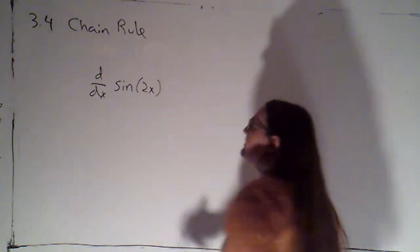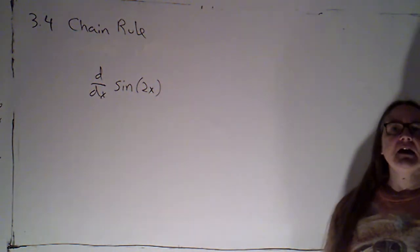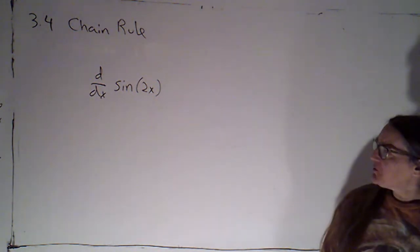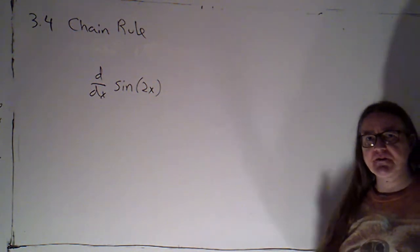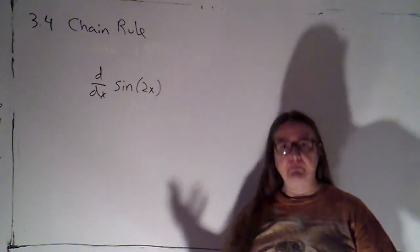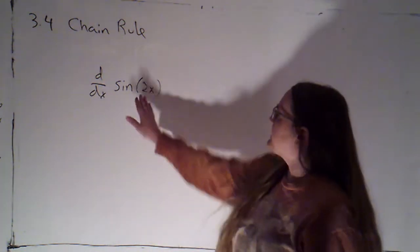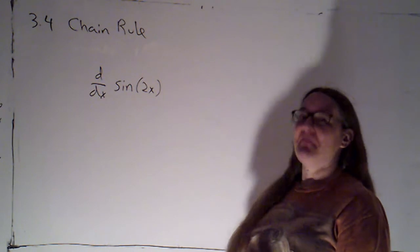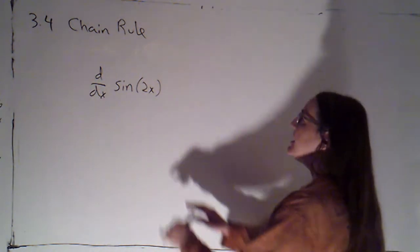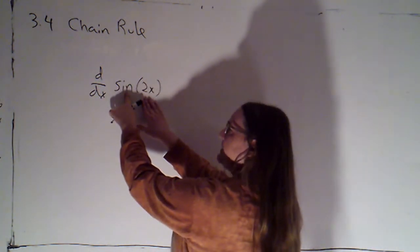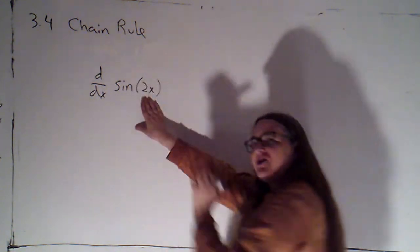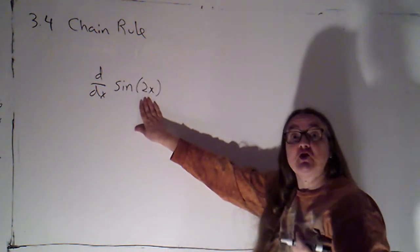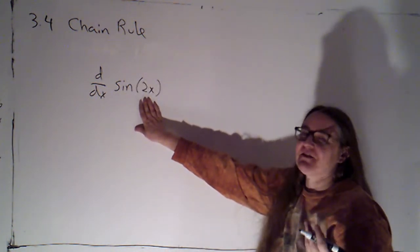Let's say I wanted to take the derivative of sine of 2x. A lot of times people think, well, the chain rule deals with function compositions, and function compositions look complicated. This doesn't look super complicated, but it's a function composition. Because my input to the sine function isn't just x, it's 2x. So that's a function composition.